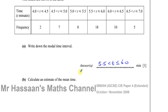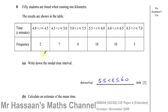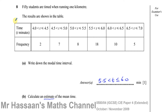Part B says calculate an estimate of the mean time. Again, they can't ask us to find the exact mean because we don't know the actual values of any of these items. There are two items between 4 and 4.5, but we don't know what they are — the table doesn't have that detail because it's a grouped frequency table. That's why the word 'estimate' is used. To estimate, we take what's called the mid-interval value — halfway between the group boundaries.